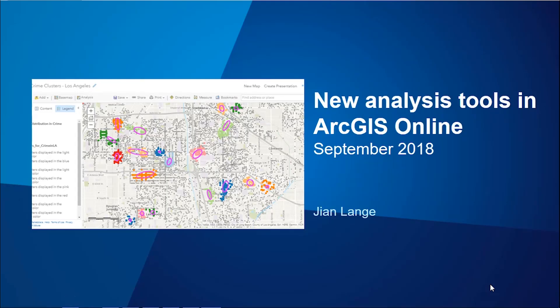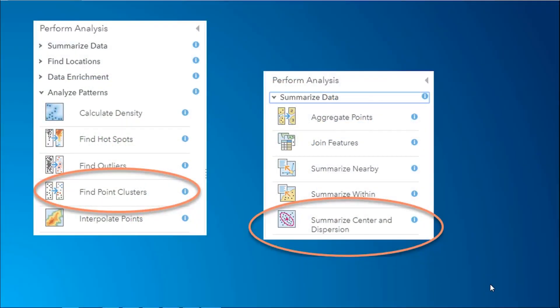In RGS Online September 2018 release, we have added some new analytical tools. In this demo, I would like to show you two of these new tools: the Find Point Clusters tool, as well as the Summarize Center and Dispersion tool.